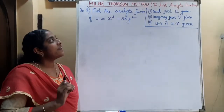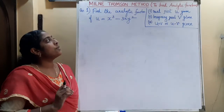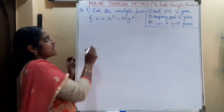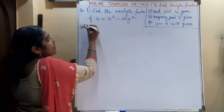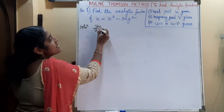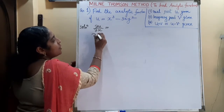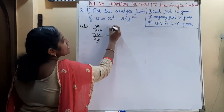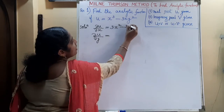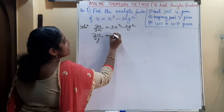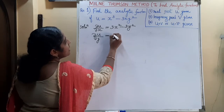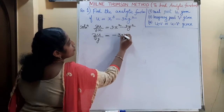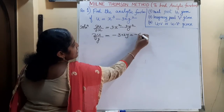First example: find the analytic function if U = X³ − 3XY². In step 1, take the partial derivatives: ∂U/∂X = 3X² − 3Y², and ∂U/∂Y = −6XY.